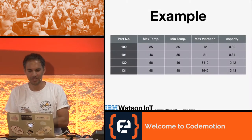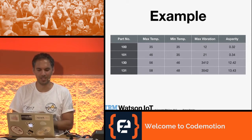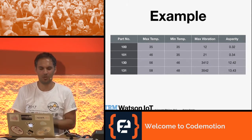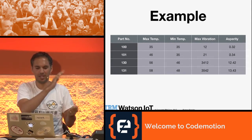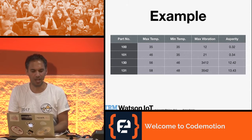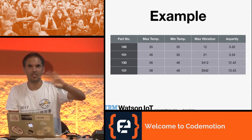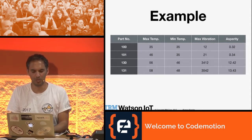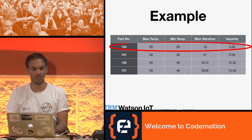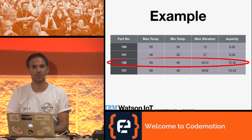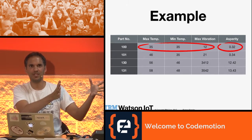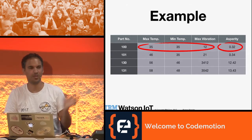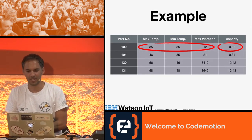Let's consider this table — this is data from a hypothetical production machine. We measure temperature minimum, maximum, and vibration. We aggregate: we take the minimum, the maximum, we could also take the average. Then we measure asperity — that's a measure of quality, how a part has been produced, whether it's a good part or a bad part. Part number is not very interesting, but all the other fields are quite interesting for us.